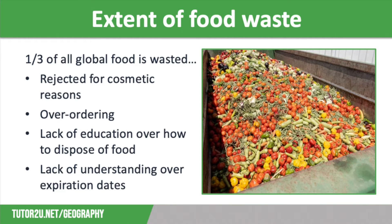One of the biggest wastes of food is produce that's rejected for cosmetic reasons — for example, vegetables that might be oddly shaped, or fruit which has got blemishes on the peel that isn't even going to be eaten. But there are other reasons for food waste: some of it is down to shops, supermarkets and restaurants over-ordering products, so not being able to sell everything.